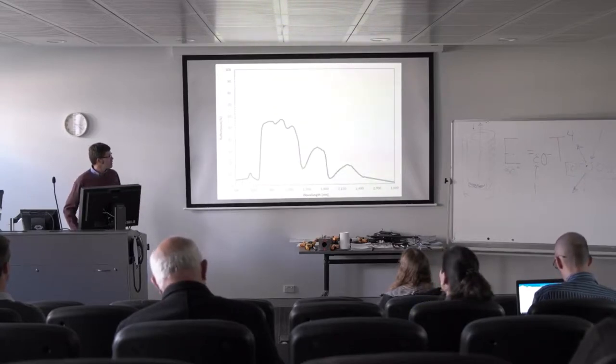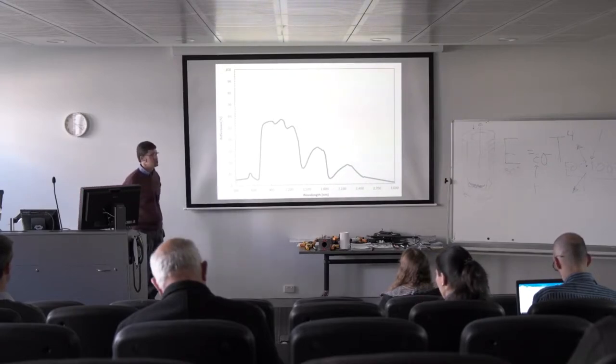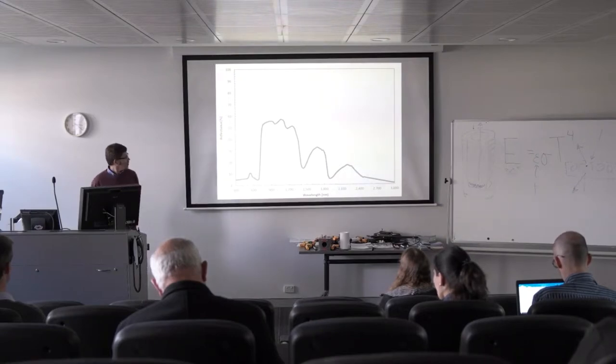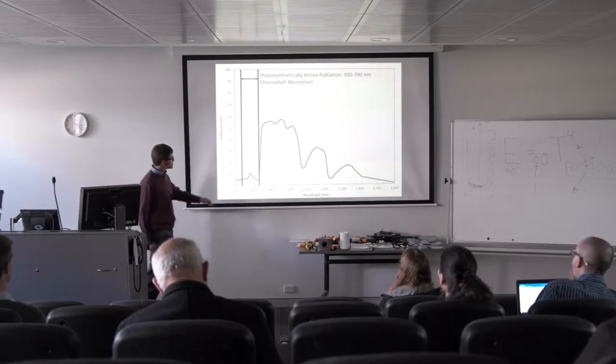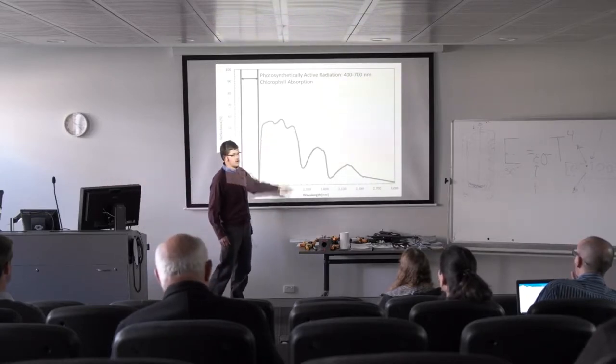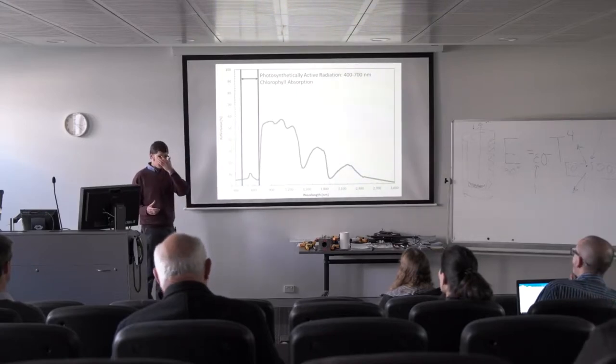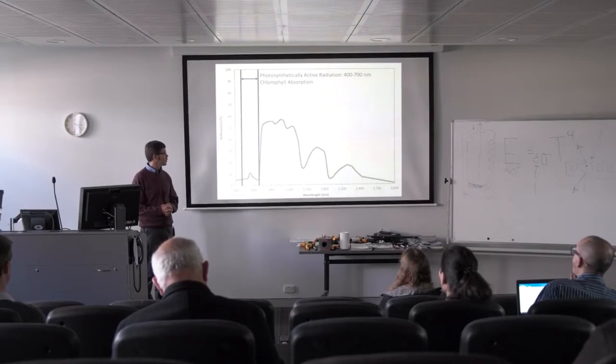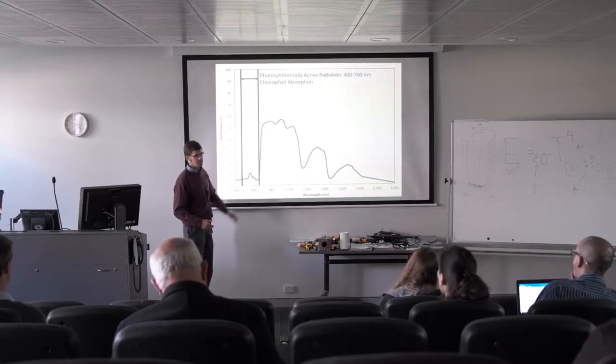I want to focus on the reflectance spectrum for a plant canopy for a minute. You can see there are a lot of unique features here. One we already talked about earlier is the photosynthetically active radiation range, which is 400 to 700 nanometers. The reason it's so much lower than other parts of the reflectance spectrum is because green leaves have a lot of chlorophyll, and the chlorophyll is absorbing all of the photosynthetic photons for photosynthesis.